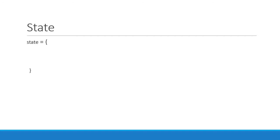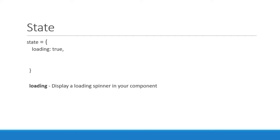First let's talk about the state of our application. Typically with data fetching we go with three properties for the state object. The first property is a loading flag which indicates whether the data is currently being fetched or not. If you have an application with UI this flag would help you display a loading spinner in your component. The next property we would have is the data itself — the list of users. The initial state would have an empty array as no users have been loaded yet.